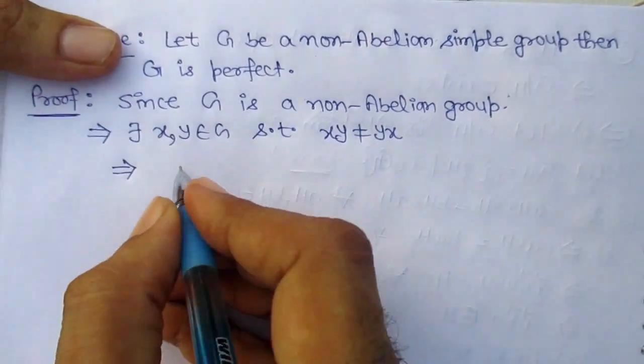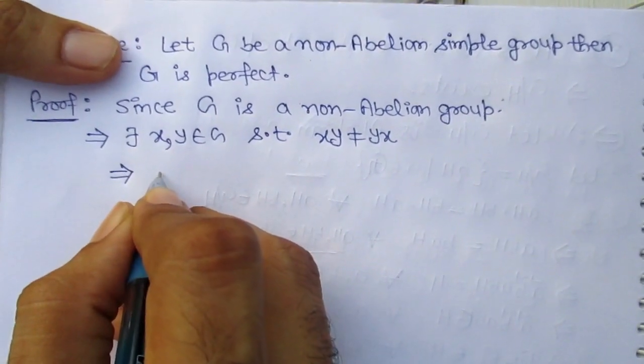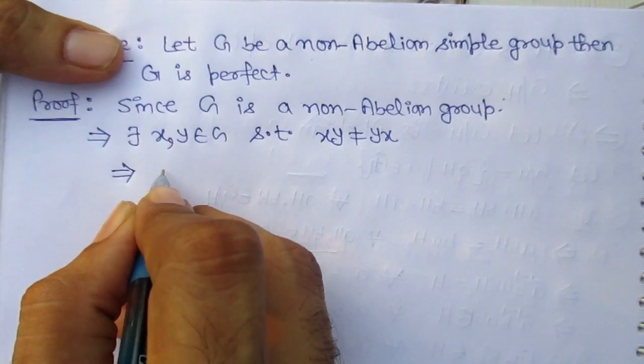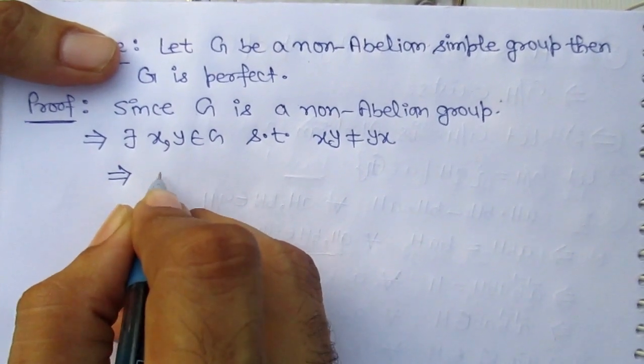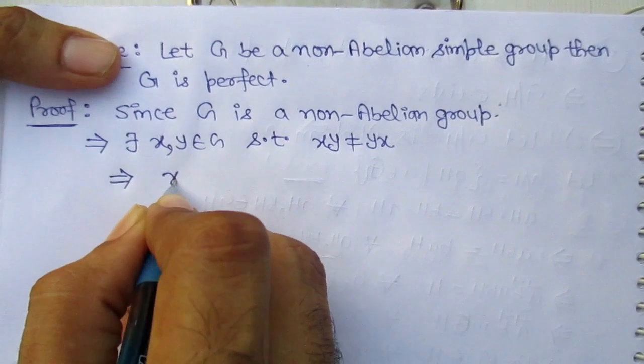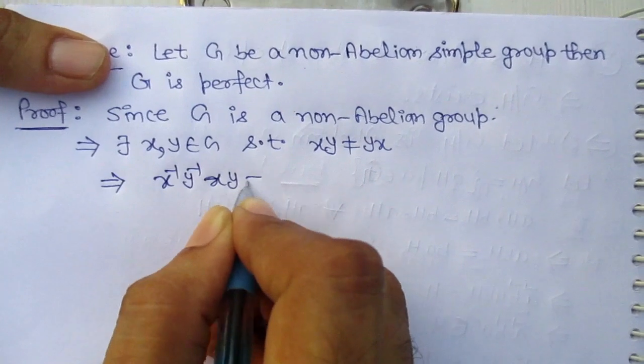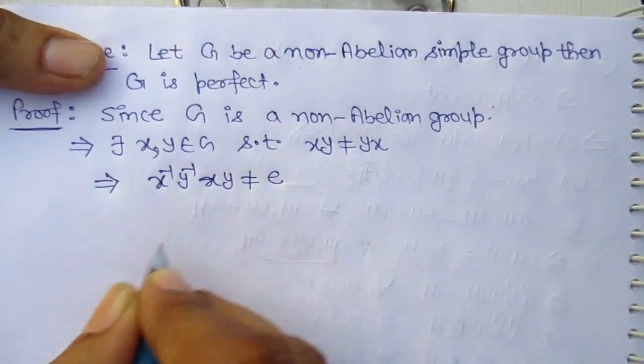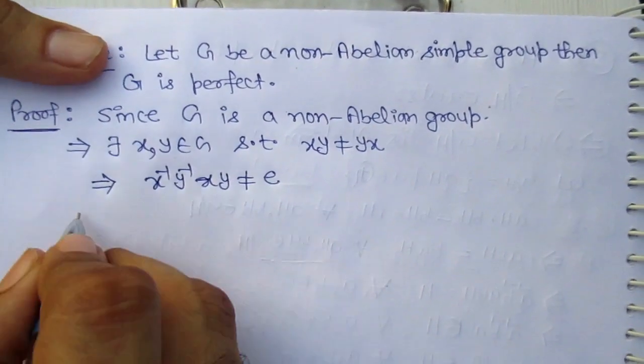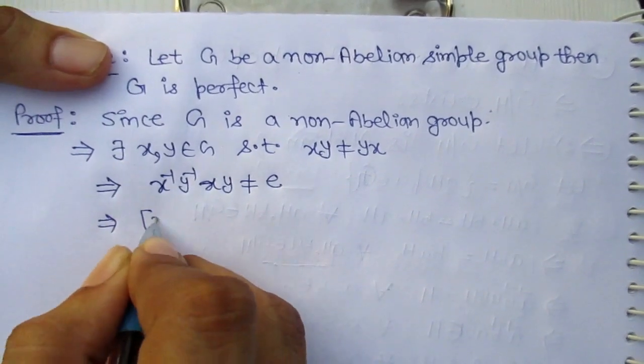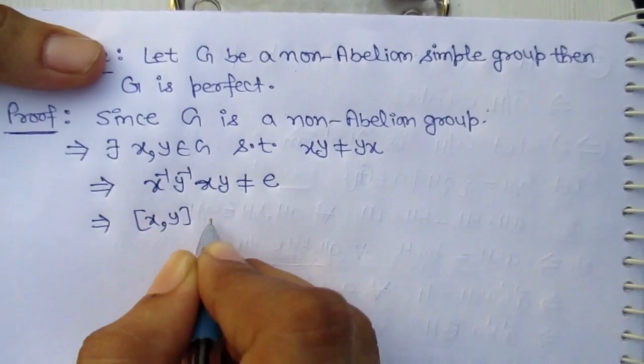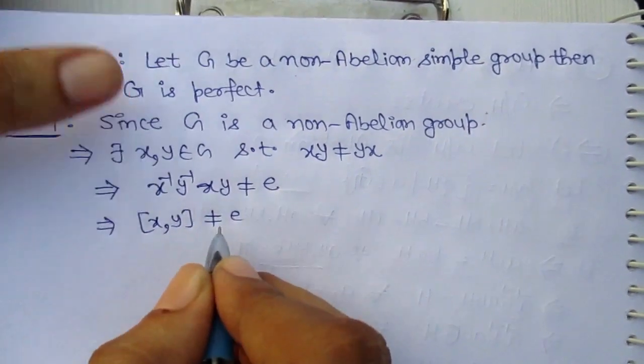It implies x inverse y inverse xy is not equal to identity. That is, the commutator of xy is not equal to identity.